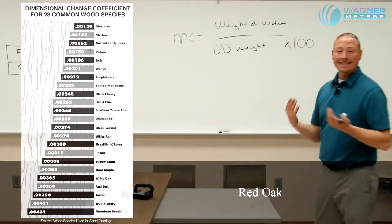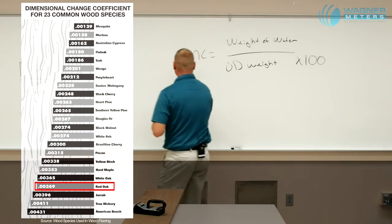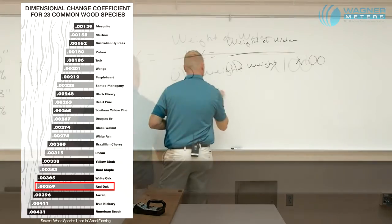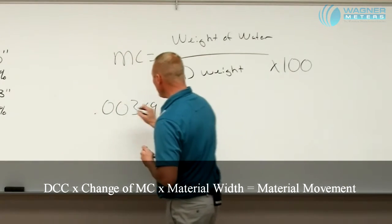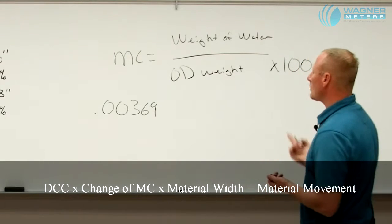So let's use the example of red oak. Red oak has a dimensional change coefficient of 0.00369. So what does that mean? Or how do we use that? Well, that dimensional change coefficient, what we need to know is the percentage of moisture that changes, also with the width of that material that we will be using.